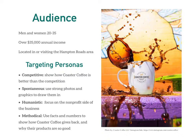With the competitive persona, we want to show how Coaster Coffee is better than the competition, such as Starbucks and Dunkin' Donuts. For spontaneous personas, we want to use strong photos and engaging graphics that draw them in, since they're being spontaneous and visiting Coaster Coffee at a whim. This is where we really engage them with visuals so they think, oh, that looks awesome, and we bring them in.